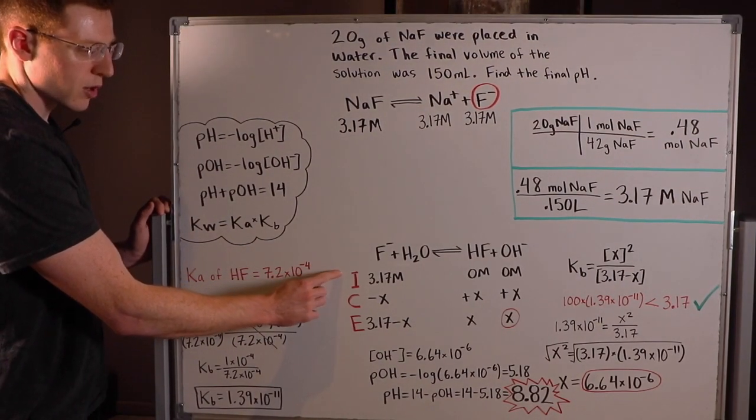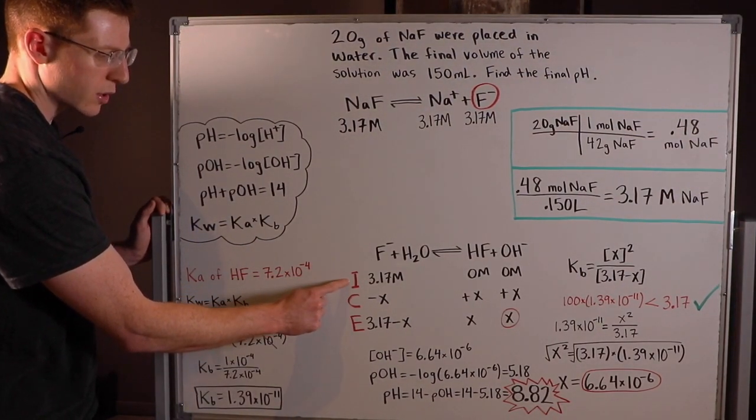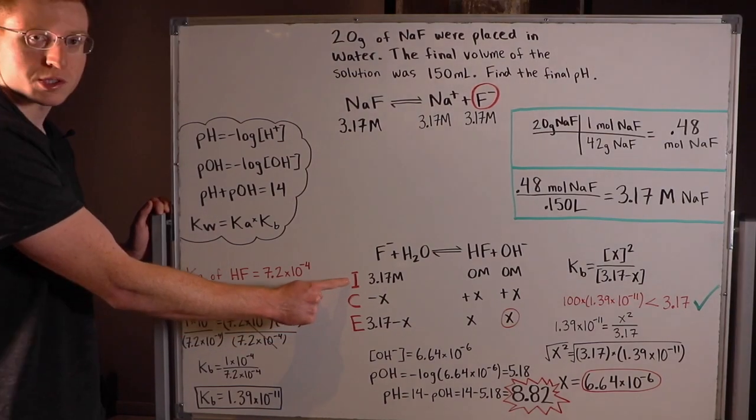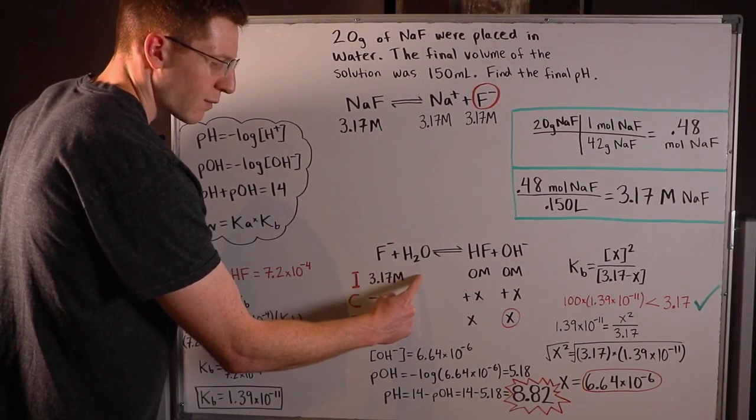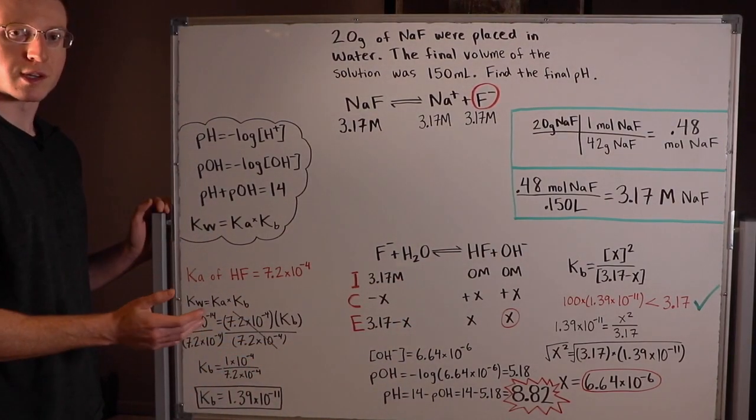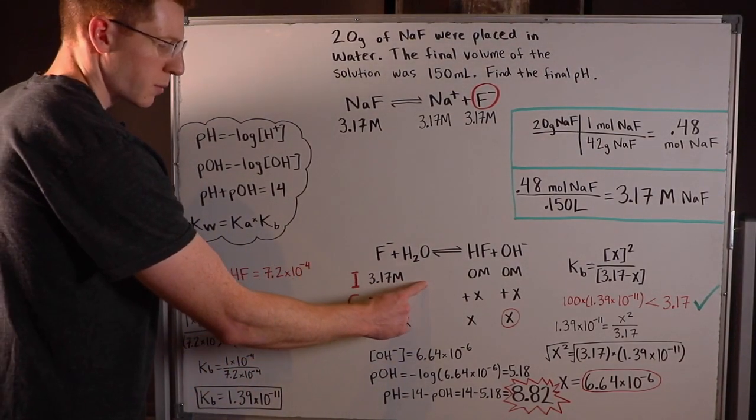So as you can see, I've drawn out my ICE table and I started with the I row, which of course stands for the initial amount of each thing here. You can see I haven't put anything in for H2O. That's because it's a pure liquid and it will not affect our equilibrium.